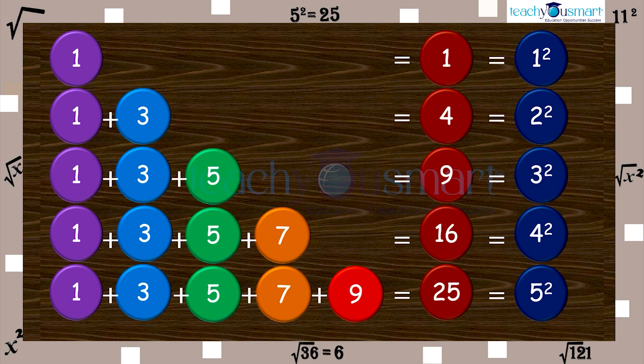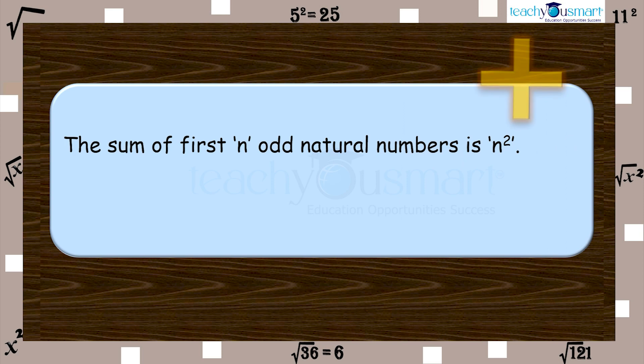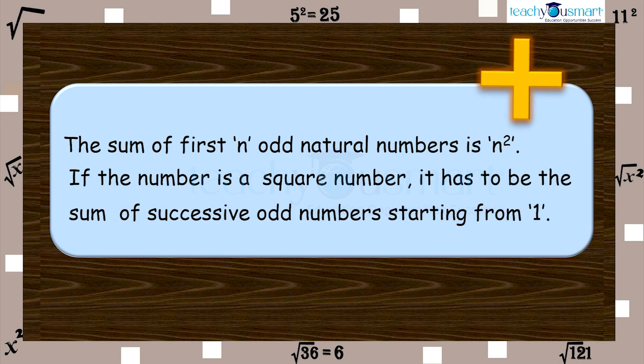Thus, we can say that the sum of first n odd natural numbers is n square. That is, any square number can be written as the sum of consecutive odd numbers starting from one.